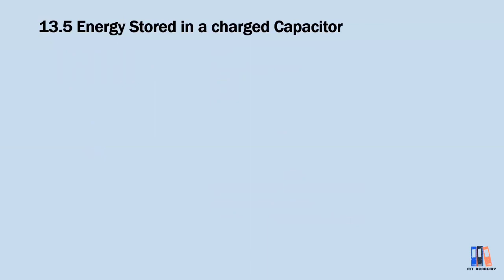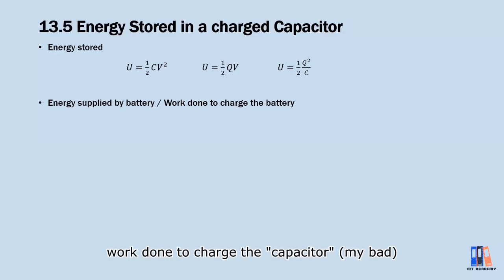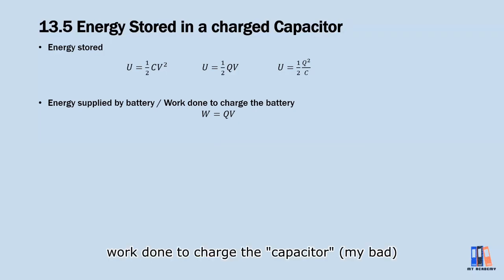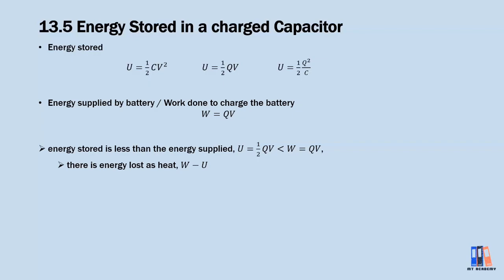Before we end, we look into the energy stored in a charged capacitor. You are not required to derive the formula, only to use it. The energy stored in a capacitor is U = ½CV². The second and third forms can be obtained by substituting Q = CV. Also important is the energy supplied by the battery, or the work done to charge the capacitor, which equals W = QV. Comparing the energy stored in the capacitor and the work done, you'll find that the energy stored is less than the work done. This indicates energy loss as heat during charging of the capacitor, which can be calculated as W − U.